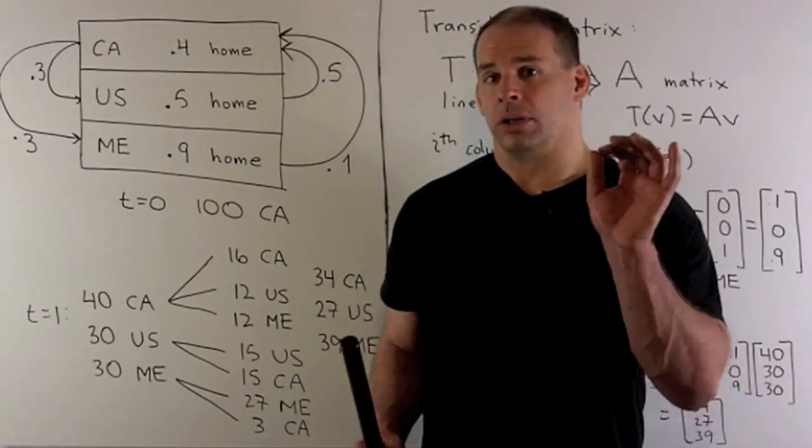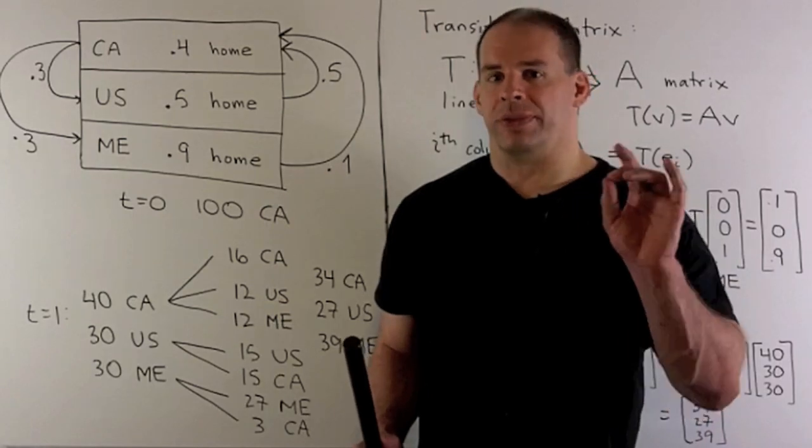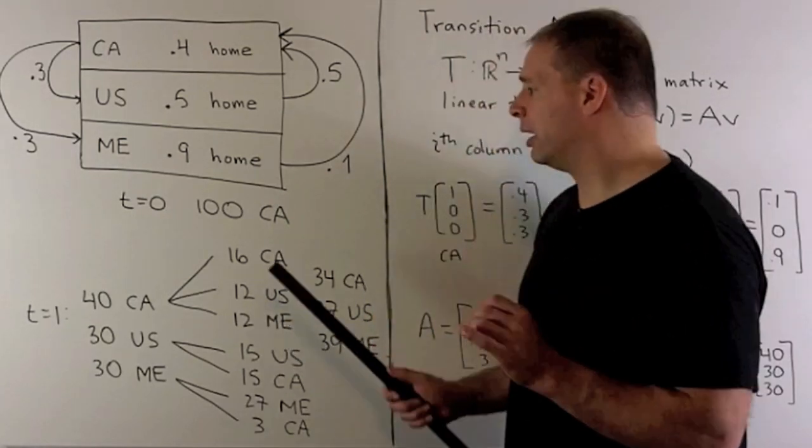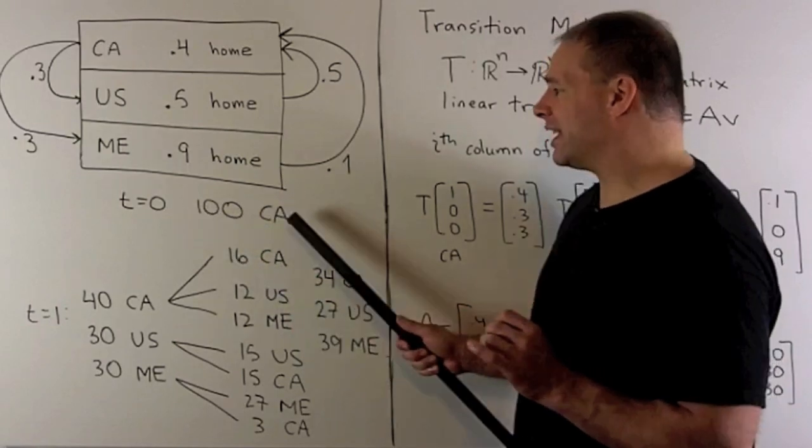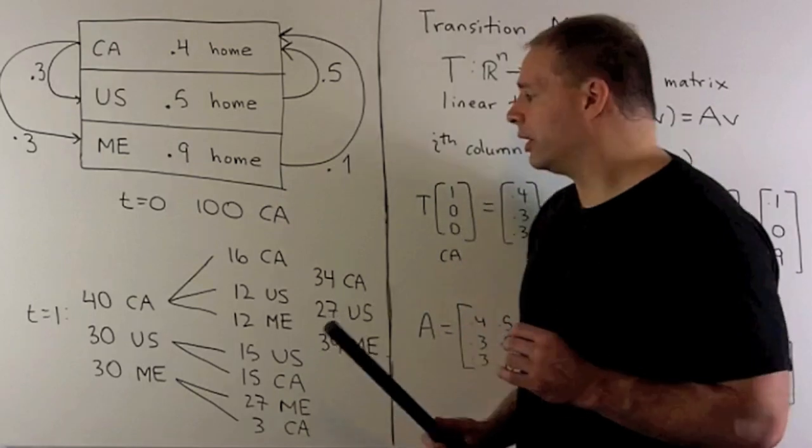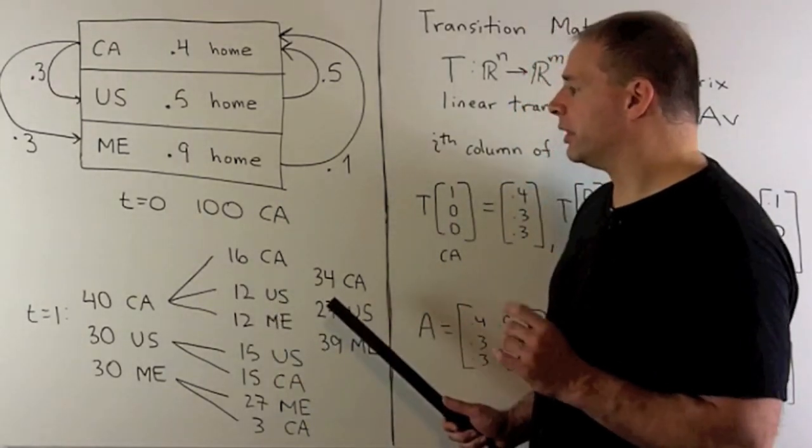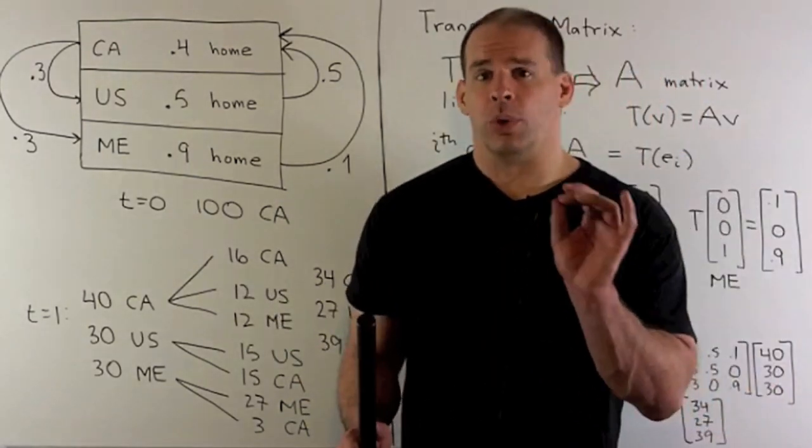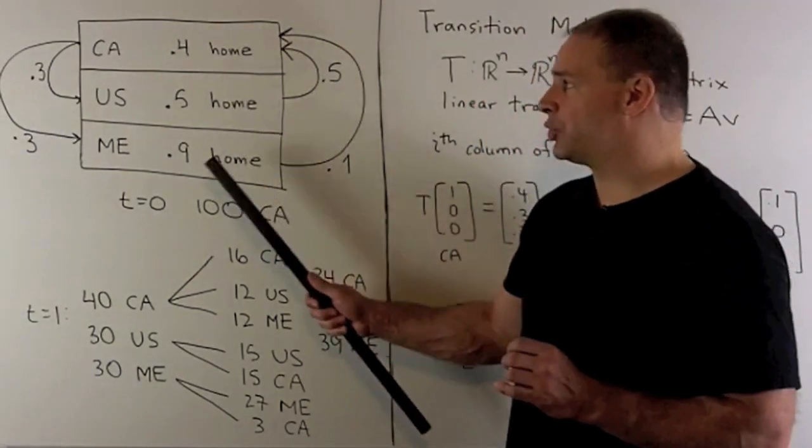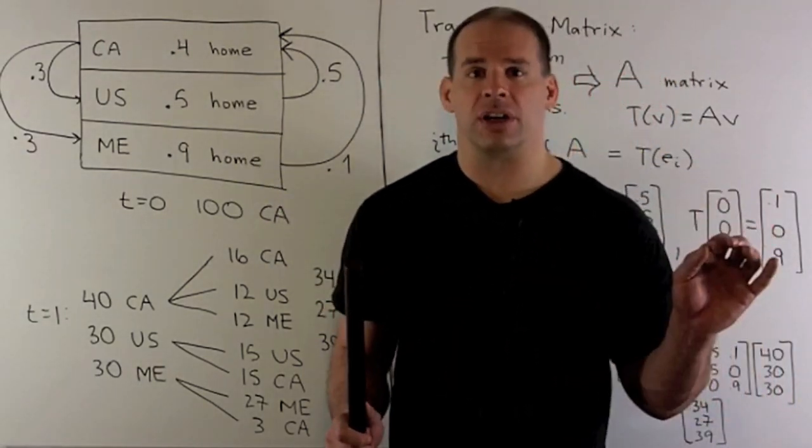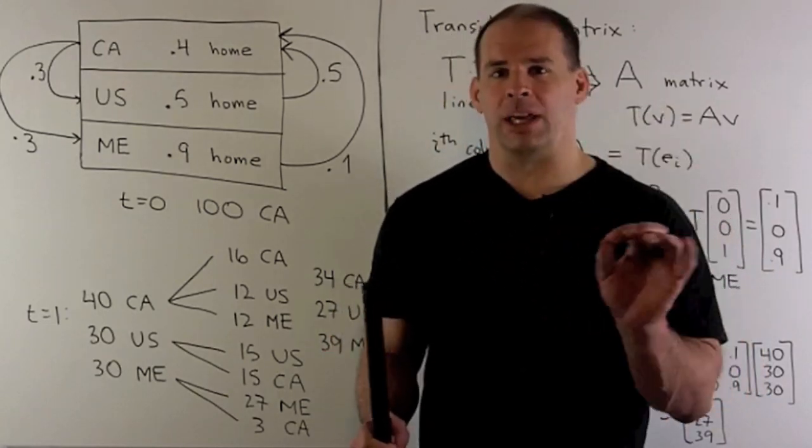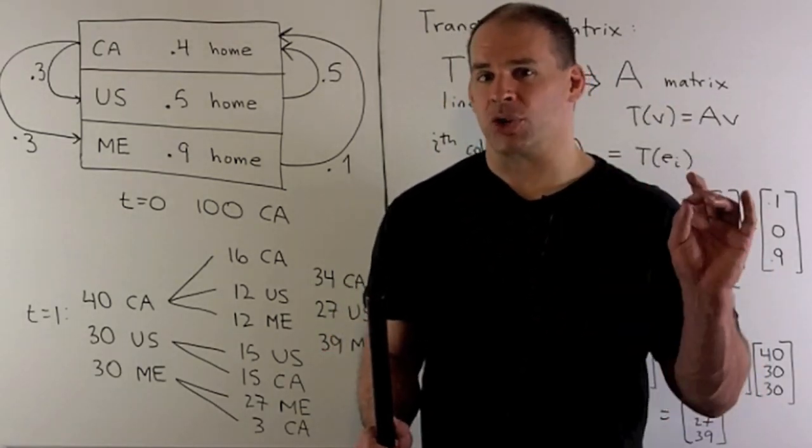For the transition matrix, what this will do, note here, this is a very simple case where we have just 100 in Canada, nothing in the US and Mexico to start, and we're only going out for two years. If we want to do something more complicated, I could have populations in each one to start, and we could go out for, say, 10 or 15 years. The transition matrix is going to let us do all that bookkeeping just with matrix multiplication.